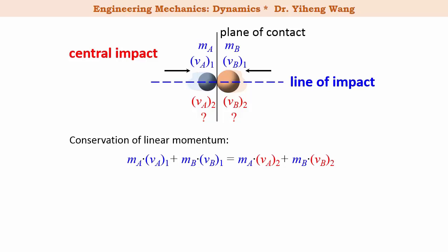As you can see, we have one equation but two unknowns, the final velocities of the two particles. Therefore, we cannot solve for both unknowns unless we have another equation. Where should we find the other equation?